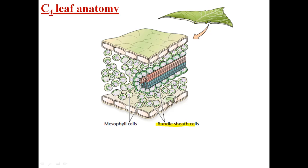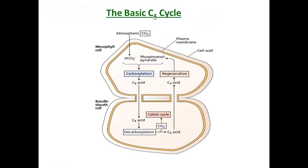Bundle sheath cells generally surround the xylem and phloem, and mesophyll cells surround the bundle sheath cells in a ring shape. The basic C4 cycle starts by absorbing atmospheric carbon dioxide.